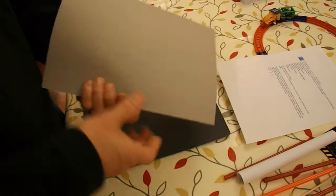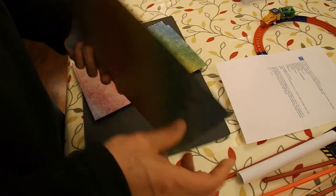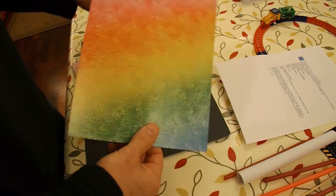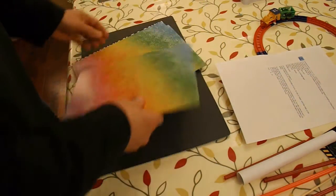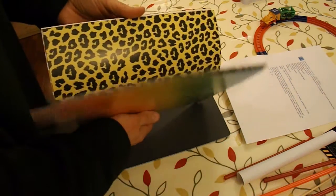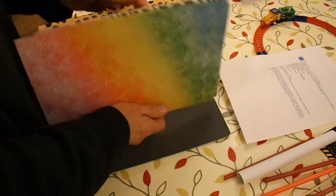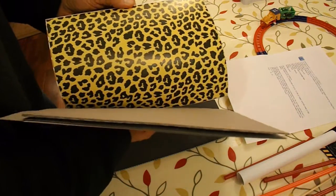Instead of the manila folders, I've got some thin card here. It's pretty thin stuff. I think that's about the same as a manila folder would be. Various different types. That looked interesting, didn't it?